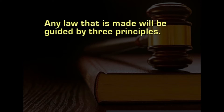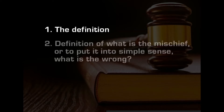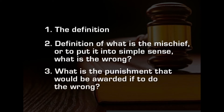To address the mischief in any society, any law that is made will be guided by three principles. Number one, we need to define what is the mischief — what is anti-competition, what is abuse of a dominant position. Once you define it, then you need to say what the sanction would be if you contravene the act. Basically, there are three important principles: the definition of what is mischief, what is the wrong, and what is the punishment if you do the wrong.